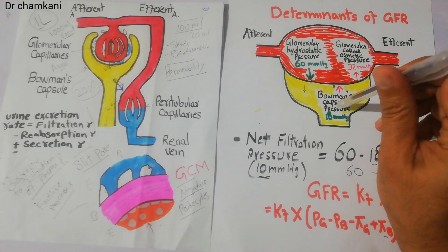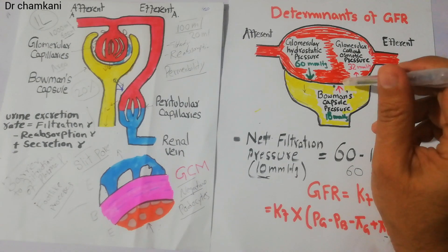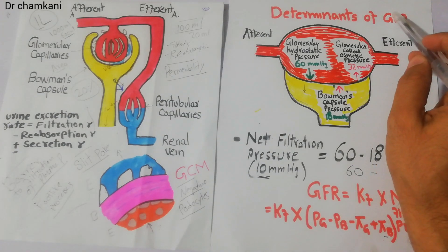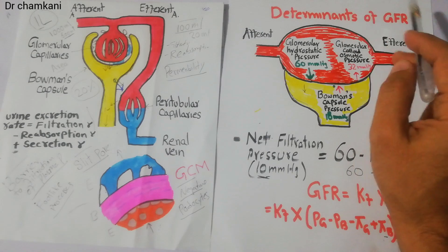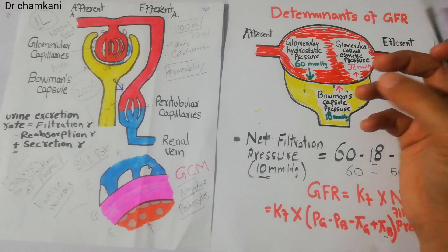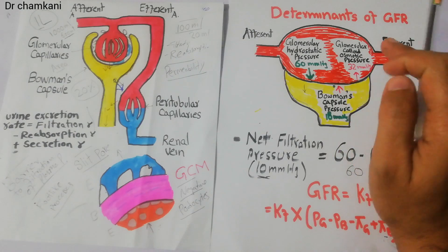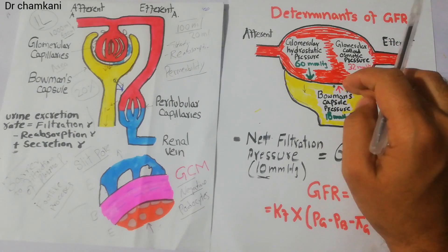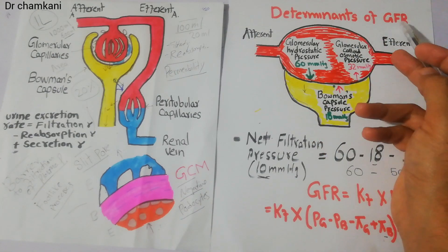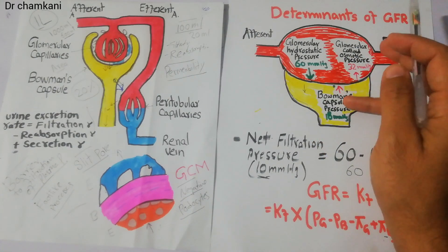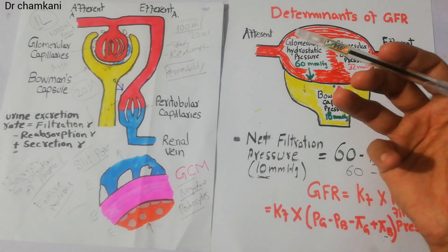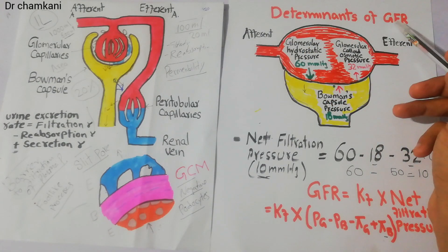So Bowman's capsule hydrostatic pressure normally opposes the filtration process. If it increases, it will decrease the GFR, and that's why it is an important determinant of the GFR. But if it decreases, it will increase the GFR. However, normally this is not a very important determinant — it is not one of the primary factors that routinely increase or decrease GFR under normal conditions.